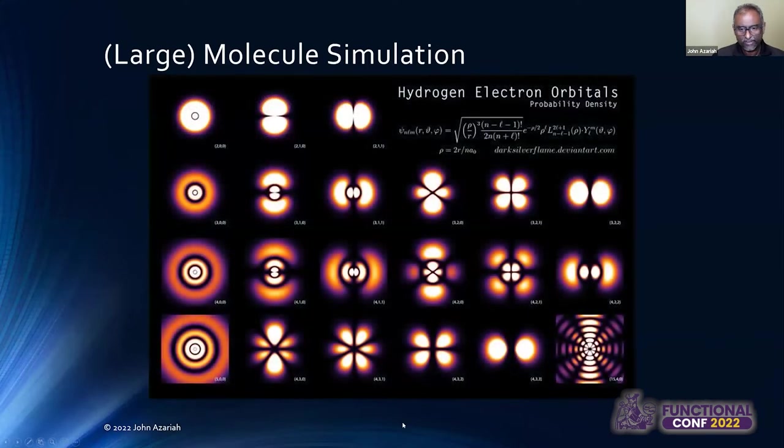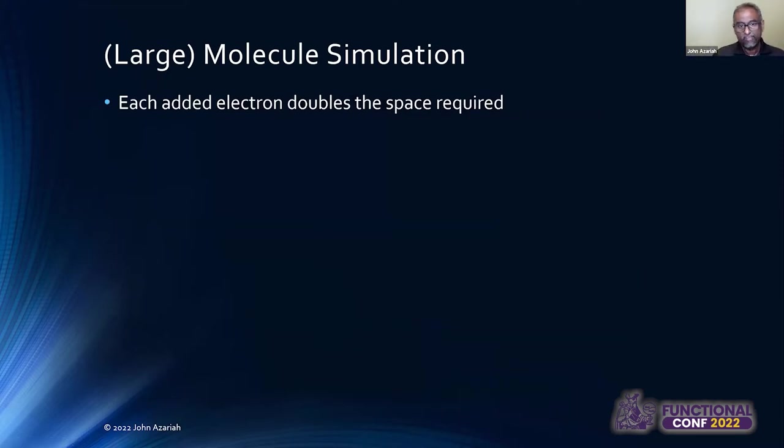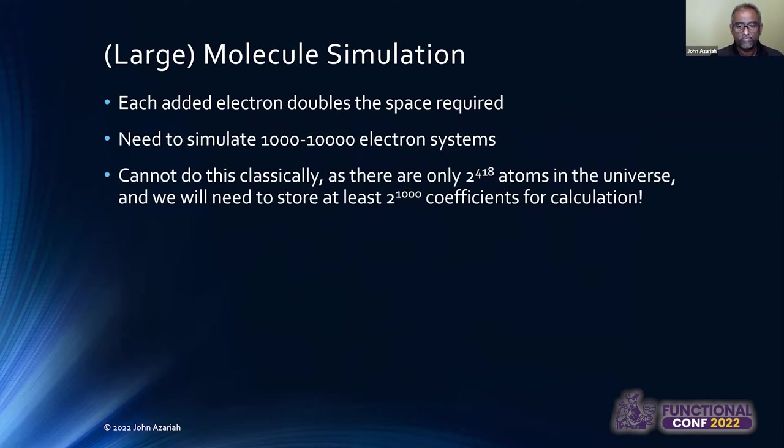For example, let's look at hydrogen, which is a single electron system, and just to map the states out of that single electron requires us to know quite a bit about its quantum state. Now, as you add electrons to a molecule, every electron that you add doubles the space required, and we hit a very hard limit very fast, in that when you want to simulate a thousand electron system, like a reasonably sized molecule, you don't have space, right? Because there are only two to the 400 and something atoms in the universe, and you need to store at least, for a thousand electron systems, in the order of two to the thousand coefficients for the calculation. So, we don't have space, we just run out of space in the universe to be able to do this classic thing.